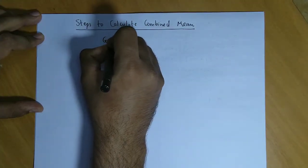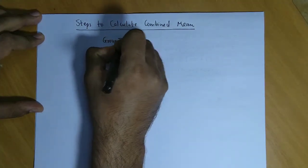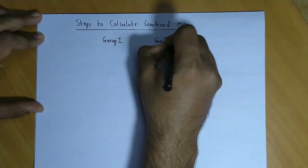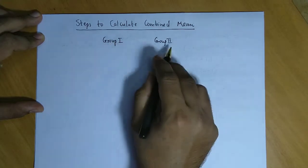Suppose we have two groups, namely group one and group two. So we have the first group and the second group.